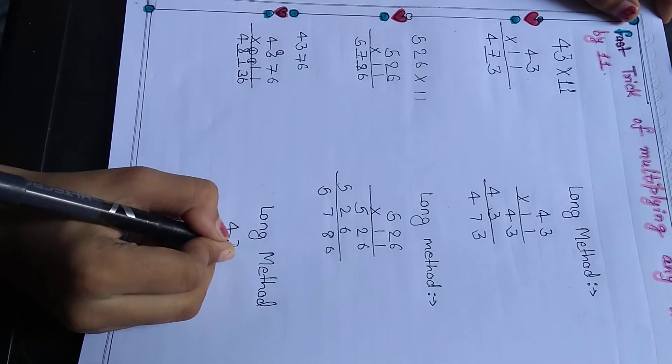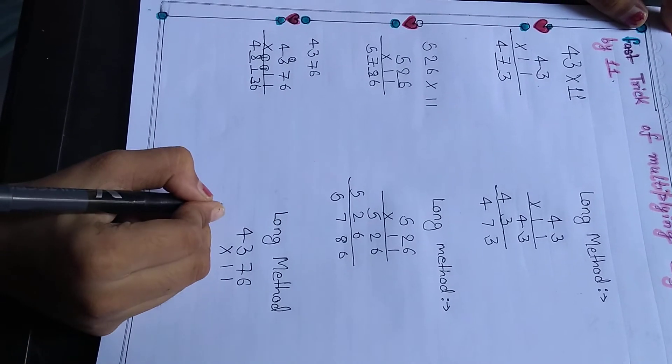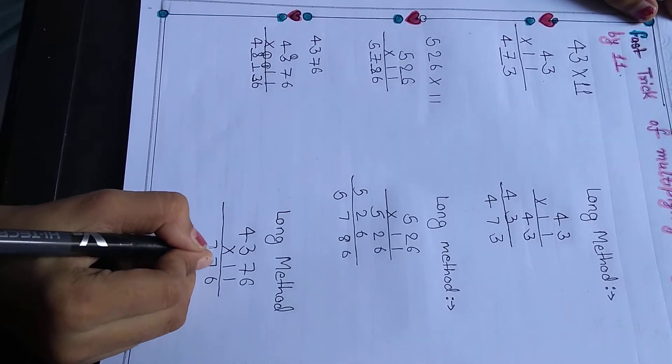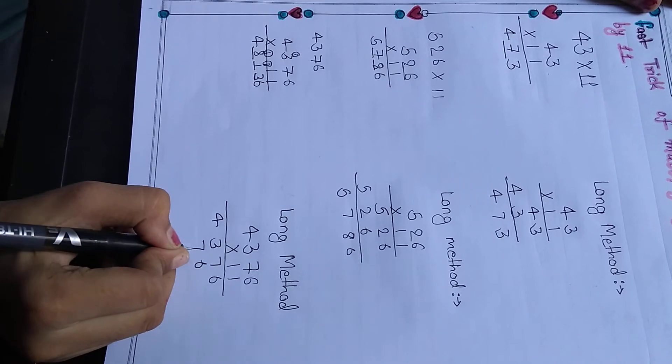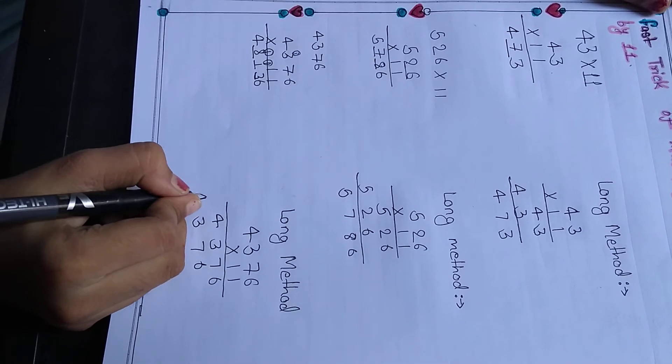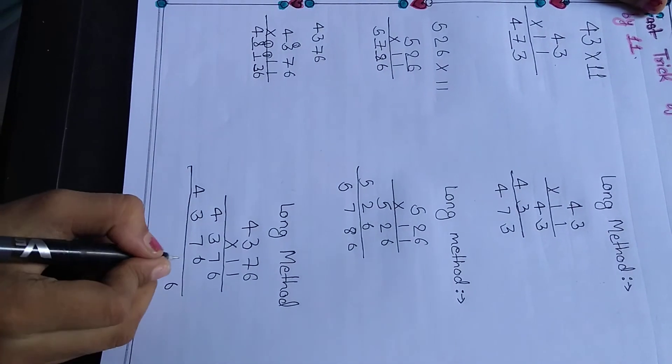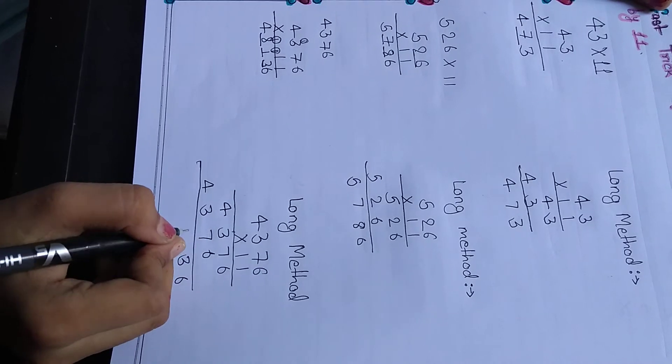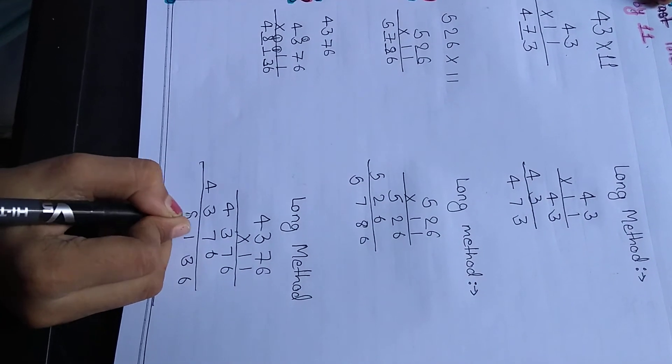4376 multiplied by 11. 6, 7, 3, 4 and 6, 7, 3 and 4. Let us check. 6 plus 7 is 13, carry 1. 7 plus 3 plus 1 is 11, carry 1. 3 plus 4 plus 1 is 8, and 4. The answer is 48136.